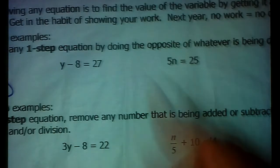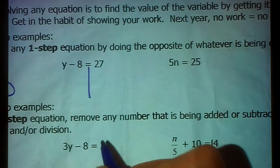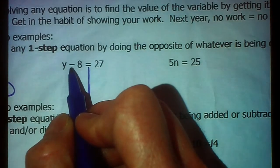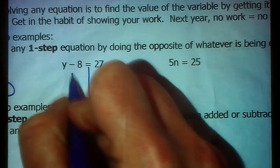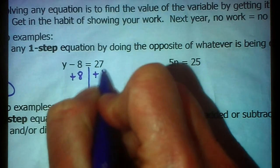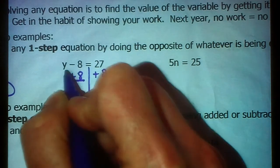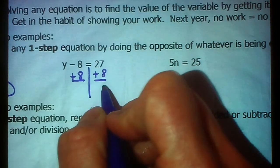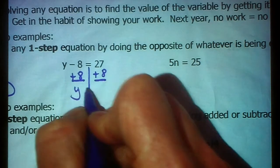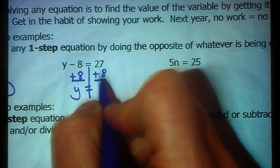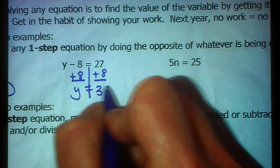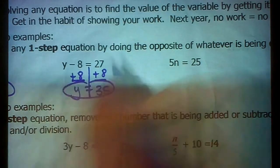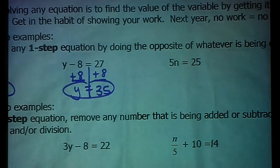Y minus eight equals twenty-seven. I'm going to draw my line down. Okay, eight's being subtracted from Y. The opposite of subtracting eight is adding eight. So whatever you do to this side to get the Y alone, you need to do to this side as well, so that it stays equal to each other. So Y would equal, when you take twenty-seven plus eight, you get thirty-five.